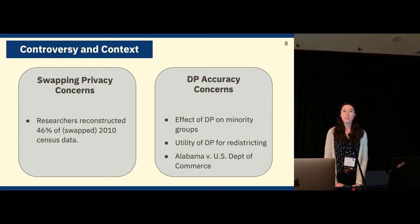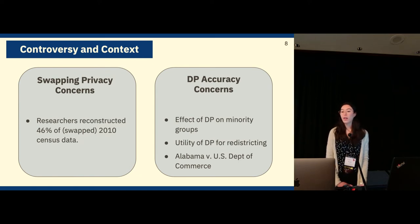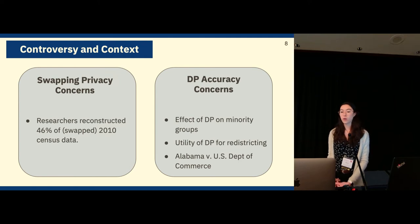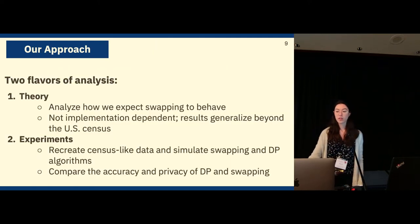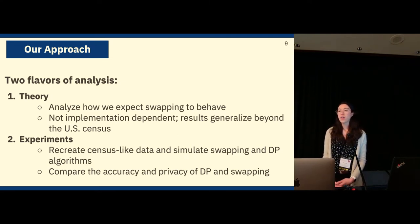There's ongoing debate surrounding the Census Bureau's switch from swapping to differential privacy. On one hand, researchers from the Census Bureau were able to reconstruct 46% of swapped 2010 census data, which is unacceptable. On the other hand, there's been concern about the accuracy of differential privacy, especially its effect on minority groups, and its utility for redistricting — the focus of a court case brought by Alabama against the U.S. Department of Commerce. We work to better understand both accuracy and privacy of these two methods using a theoretical approach and an experimental approach.